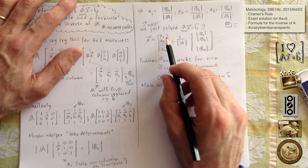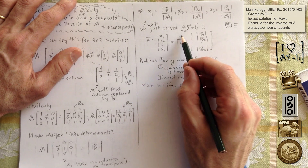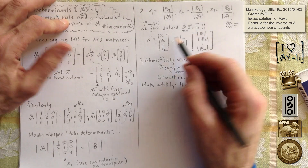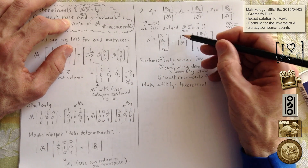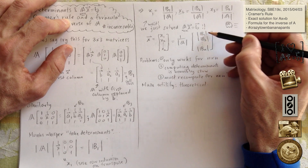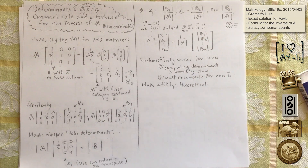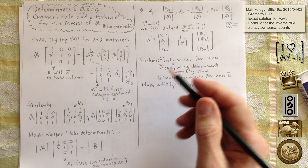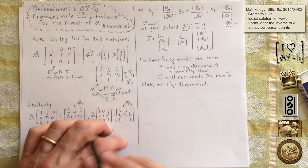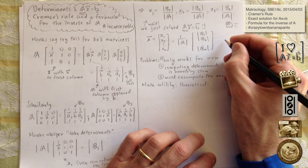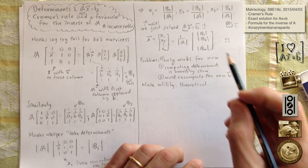So for an n by n, the solution to Ax equals b is x equals one over the determinant of A times the vector of determinants: det(B1), det(B2), ..., det(Bn), where Bj is the matrix A with column j replaced by the original b.